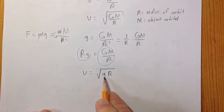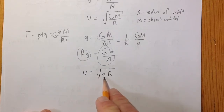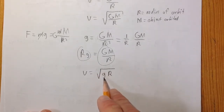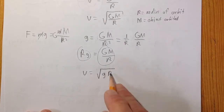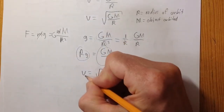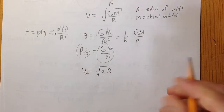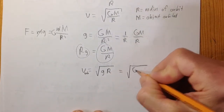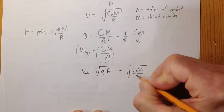So the orbital velocity v_orb is the square root of g times r, which is also the square root of big G times the mass of the object being orbited divided by the radius. Depending on what values you have, you can use either form. If you know g where you are and how far you are from the center of the planet, you can figure out your orbital velocity.